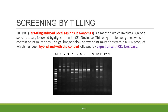Screening by TILLING — Targeted Induced Local Lesions in Genomes — is a method which involves PCR of a specific locus followed by digestion with CEL nuclease. For instance, if you carried out a PCR of a specific gene in the control and mutant and hybridize them, mismatches will result in non-perfect base pairing. The enzyme CEL nuclease will digest these mismatches, resulting in a banding profile. As seen in this CEL nuclease assay, there is a high number of mutations.